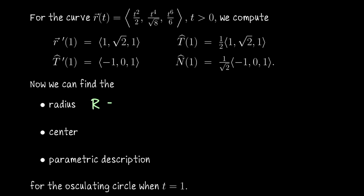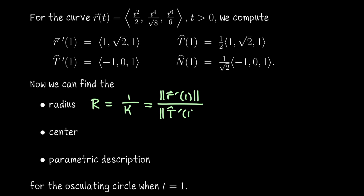Let's start finding these components. First, let's find the radius r — that's 1 divided by the curvature. The curvature is the length of T̂' divided by the speed, so the radius is the speed divided by the length of T̂'. At time equals 1, the speed (length of R') is 2, and the length of T̂' when time equals 1 is √2. So 2 divided by √2 is √2.